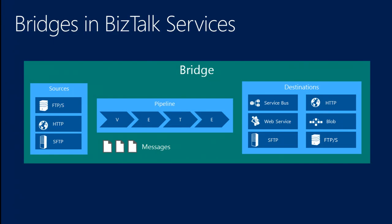So what is a bridge? A bridge is an atomic unit. It is actually made up of three smaller components, but all three can only exist together within a bridge. So you have sources, pipelines, and destinations.